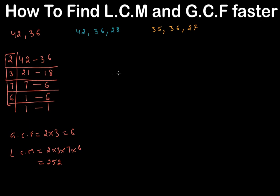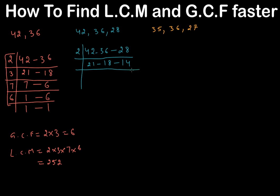Let's do one more example using three numbers: 42, 36, and 28. Note that the lines here are division lines, not minus signs — don't be confused. All three are even, so we start with 2: 2 times 21 is 42, 2 times 18 is 36, 2 times 14 is 28. Looking at 21, 18, and 14 — 21 is odd so there's no common factor they all share, meaning GCF is just 2.